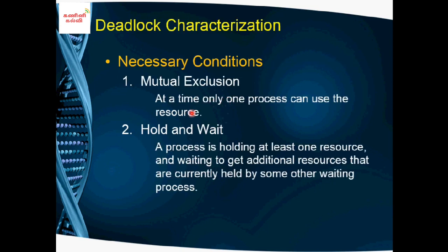For deadlock, there are four main necessary conditions. The first condition is mutual exclusion. Mutual exclusion means at a time only one process can use the resource. So if there is one CPU, only one process can use it at a time — multiple processes cannot use it simultaneously. That is mutual exclusion.